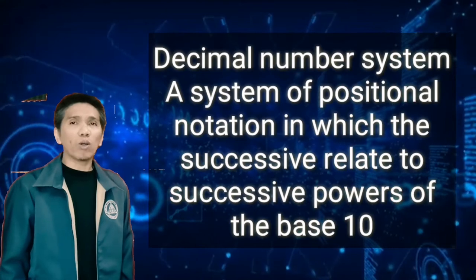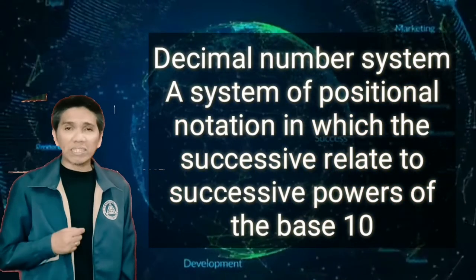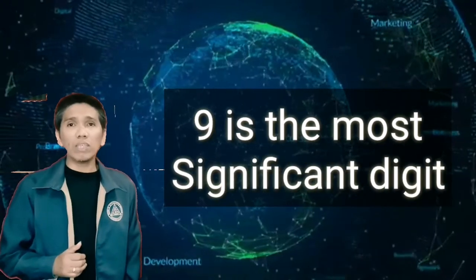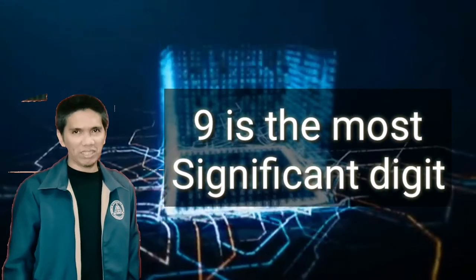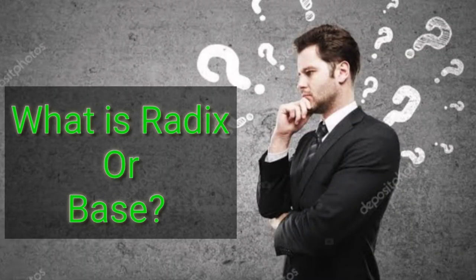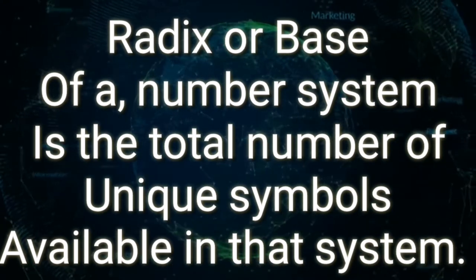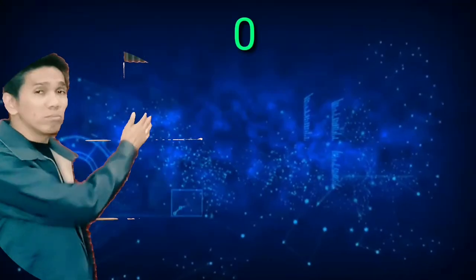A system of positional notation in which successive positions relate to successive powers of the base 10. The decimal number system has 10 unique symbols from 0 to 9. Zero is the least significant digit while 9 is the most significant digit. The radix or base of a number system is the total number of unique symbols available in that system. In the decimal number system, we have 10 different symbols: 0, 1, 2, 3, 4, 5, 6, 7, 8, 9.